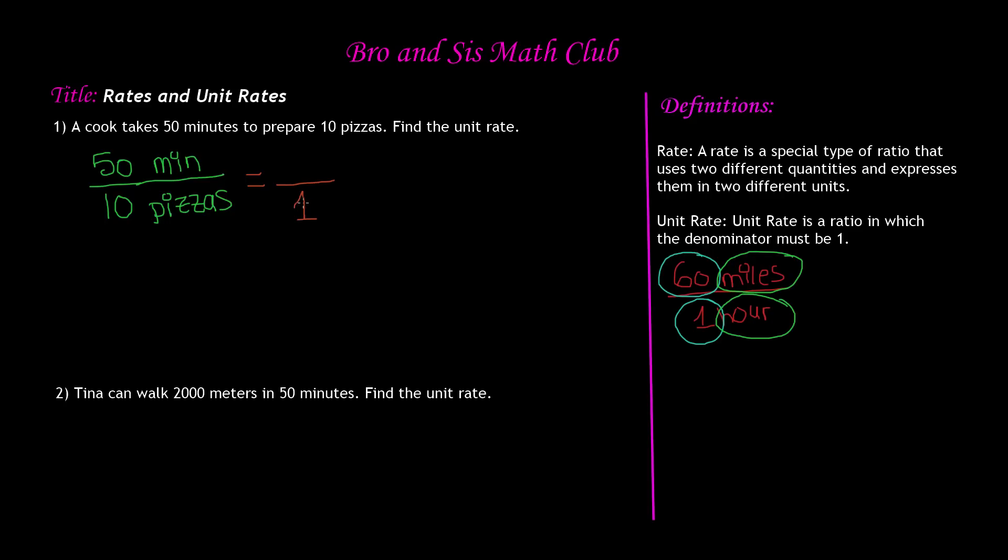What times 1 gives us 10 pizzas? Well, we can find that out by dividing. So 10 divided by 1 is 10 because any number divided by 1 is that number. So 1 times 10 gives us 10. Now what we need to find out is what number times 10 gives us 50. If we divide 50 by 10, we get 5. So here we are left with 5 over 1, and this is a unit rate because the unit rate has a denominator that is 1.